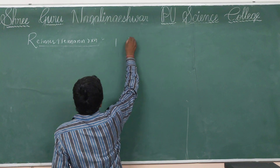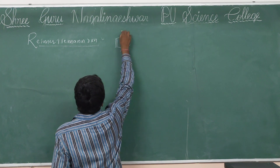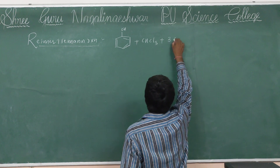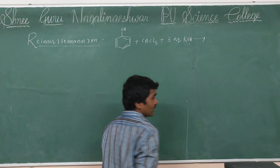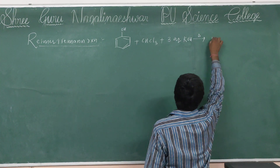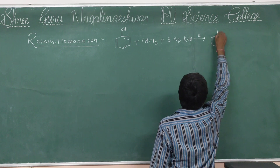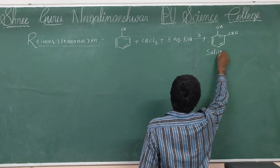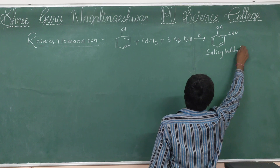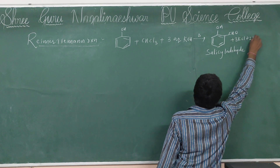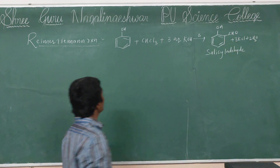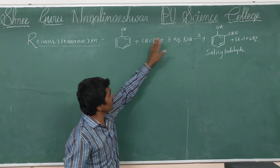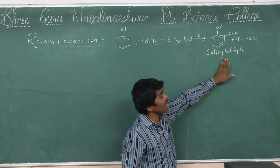In this reaction, phenol reacts with chloroform (CHCl3) plus three moles of aqueous KOH in the presence of heat, then formation of salicylaldehyde plus three KCl plus two H2O. This is the Reimer-Tiemann reaction: phenol reacts with chloroform in the presence of aqueous KOH and heat, then formation of salicylaldehyde.